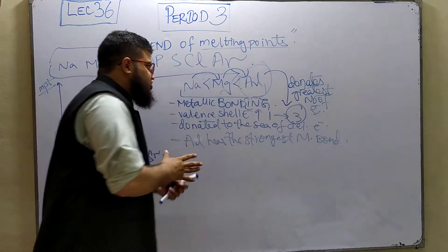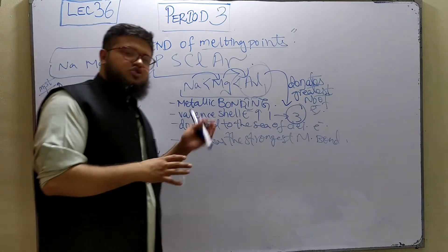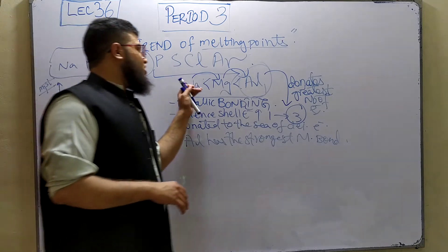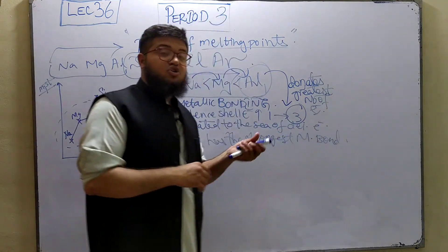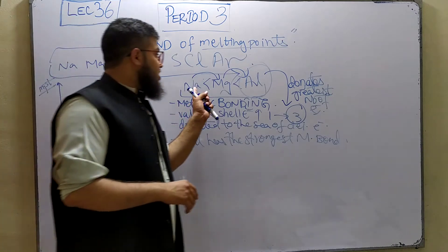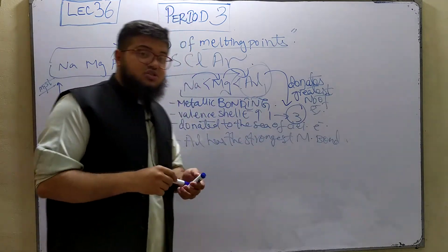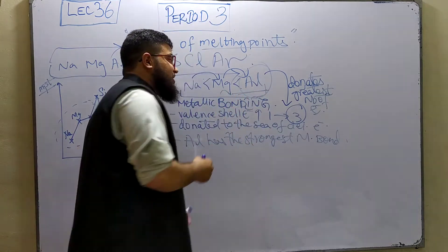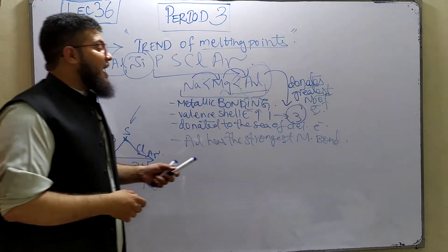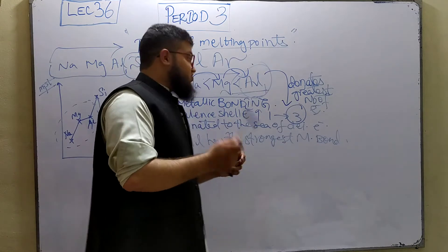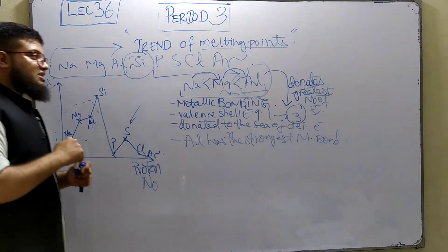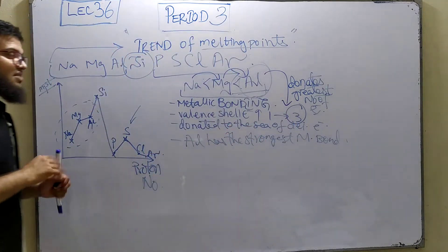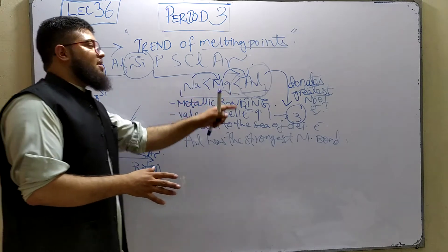So what are the marks here? First, mention that the melting points of these three elements depend upon the metallic bonding present in them. As we go from sodium to aluminum, the number of valence shell electrons increases. These valence shell electrons are provided to the sea of delocalized electrons. The greatest number are provided by aluminum; therefore, the strongest attraction exists in aluminum, and the greatest energy is needed to overcome the metallic bonds. That's the complete answer.